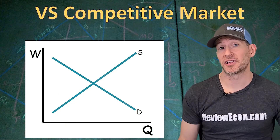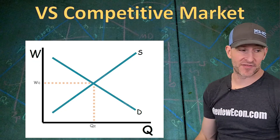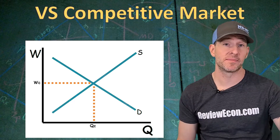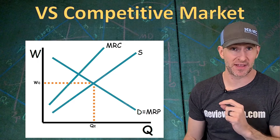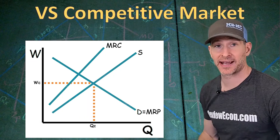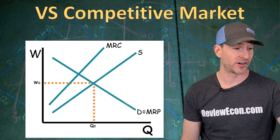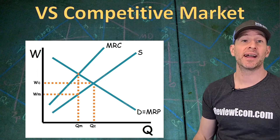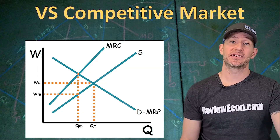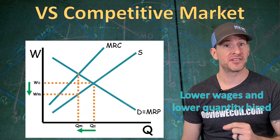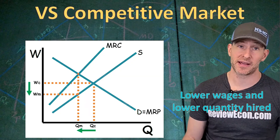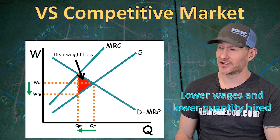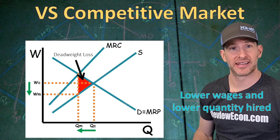Now let's compare a monopsony to a perfectly competitive factor market. In a perfectly competitive market, the quantity hired and the wage are found at the intersection of supply and demand. We can turn it into a monopsony by adding the marginal resource cost above the supply, remembering that the demand curve is the marginal revenue product. The monopsony hires where MRP equals MRC and pays a wage read from the supply curve. As a result, a monopsony pays lower wages and hires fewer workers than a competitive market would, creating deadweight loss. With numbers, you could calculate the area of that triangle to get the value of the deadweight loss.